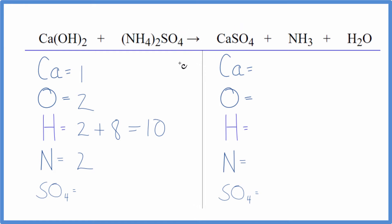Product side: one calcium, oxygens one, hydrogens two, plus these three here, so I have five total hydrogens, one nitrogen, and again just the one sulfate.